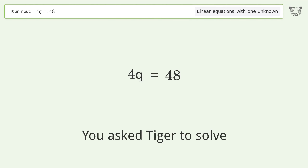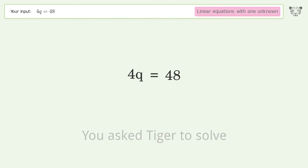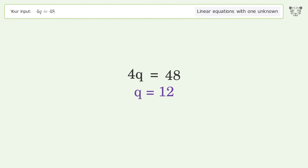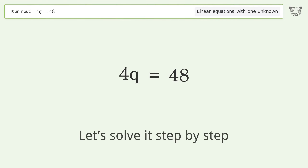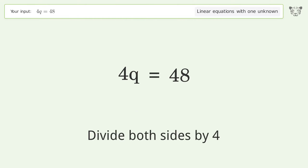Tiger is asked to solve a linear equation with one unknown, and the final result is q equals 12. Let's solve it step by step: isolate q by dividing both sides by 4.